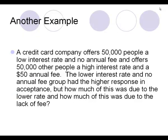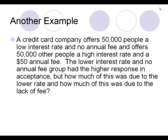Here's another example. A credit card company offers 50,000 people a low interest rate and no annual fee, and 50,000 others a high interest rate and a $50 annual fee. The low-rate, no-fee group had a higher response and acceptance. But we don't know whether this was due to the lower rate or the lack of fee — they didn't isolate those variables from each other.